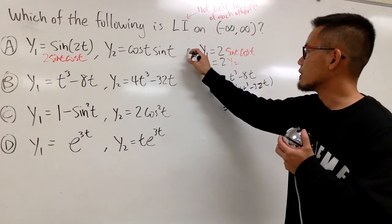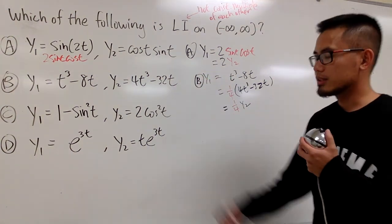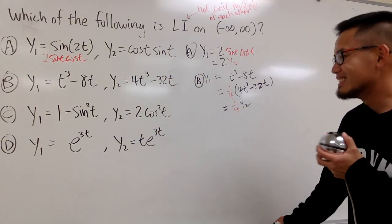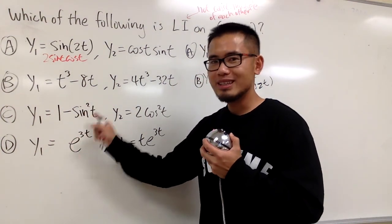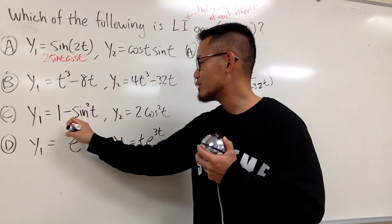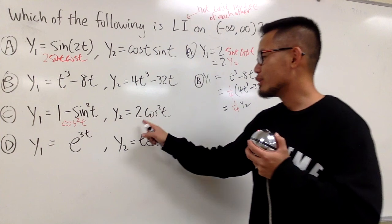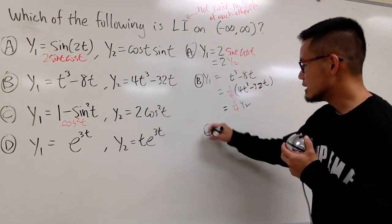That's choice A and this is choice B, and now let's look at choice C. It's slightly trickier, but it's not that bad though, because if you pay attention to this, 1 minus sine squared t is nothing but just cosine squared t. And you have 2 times that. But I will just show you the work though. This is choice C.